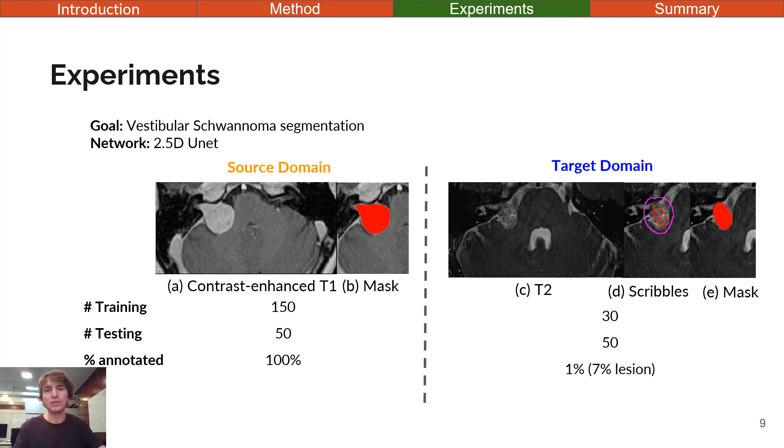To test our framework, we conducted experiments on segmenting vestibular schwannoma, a benign brain tumor. Accurate tumor segmentation and volumetric measurements have been shown to be the best indicators to detect subtle vestibular schwannoma growth. In practice, the segmentation can be either done on the contrast-enhanced T1 scans or on the T2 scans. In this work, we tested our model on a cross-modality problem. The source data corresponds to contrast-enhanced T1 scans and the target data corresponds to T2 scans. Importantly, only 30 T2 scans have been annotated using scribbles. On average, 1% of the T2 scan and 7% of the tumor have been annotated. This dataset will be publicly available soon and I will also release the scribbles.